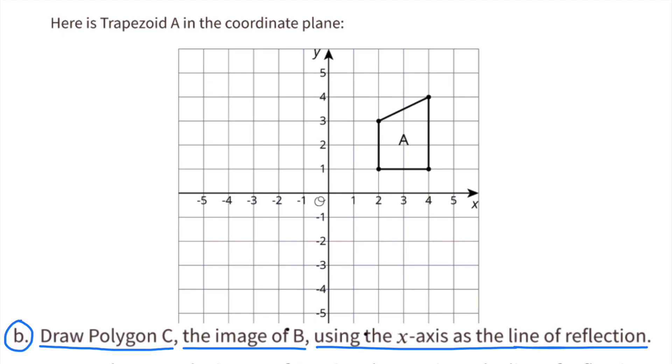B. Draw polygon C, the image of B, using the x-axis as the line of reflection.